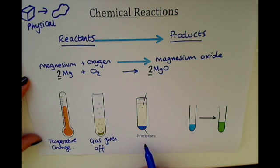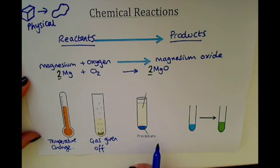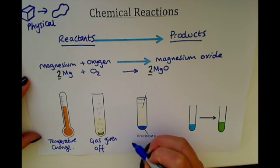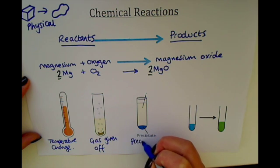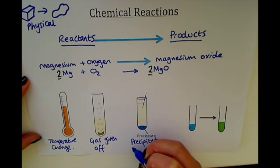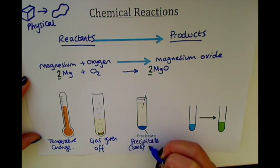The next thing you might see is something called a precipitate forming. A precipitate is a solid which is forming in the reaction, so you might see a precipitate or a solid form.